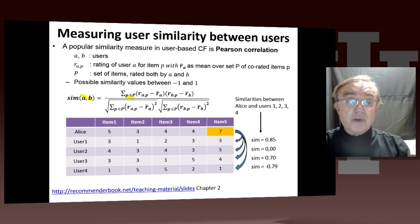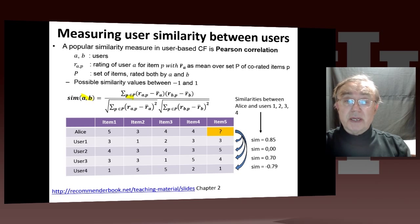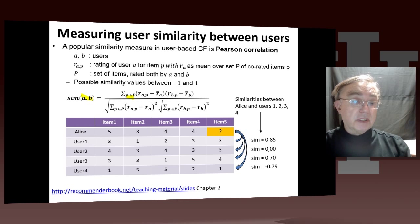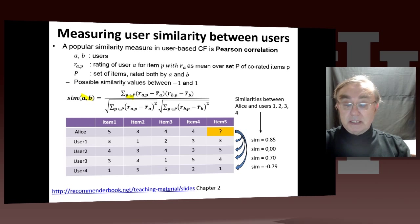Looking at the following formula: we sum over users, and implicitly that sum is only over interesting users, because there's no point in summing over users who are really very dissimilar to Alice.